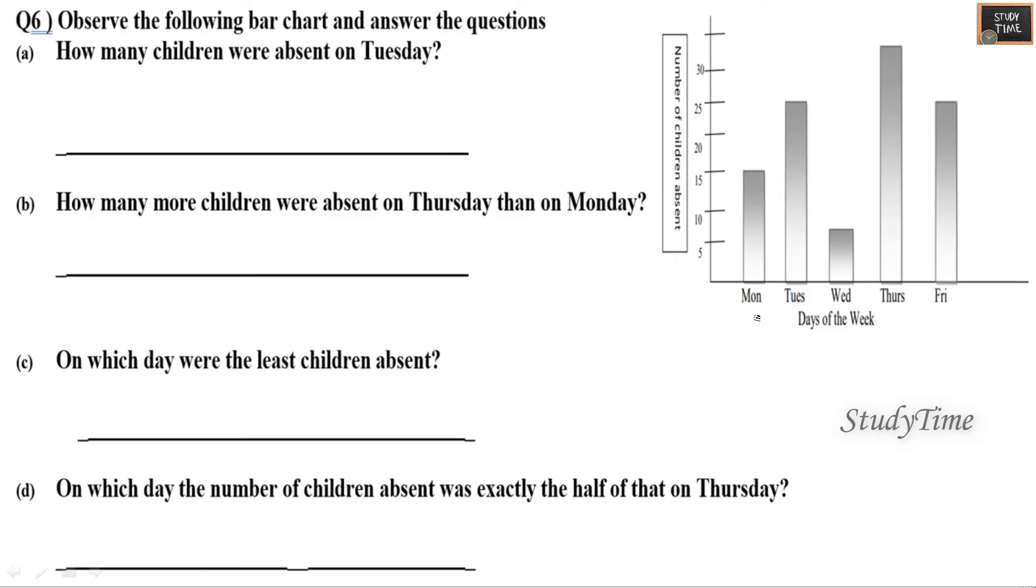Next, sixth question: observe the following bar chart and answer the questions. First question: how many children were absent on Tuesday? Tuesday, so it is 25. You can see here 25. How many more children were absent on Thursday than on Monday? So Thursday it is, Monday it is 15, on Thursday it is approximately...